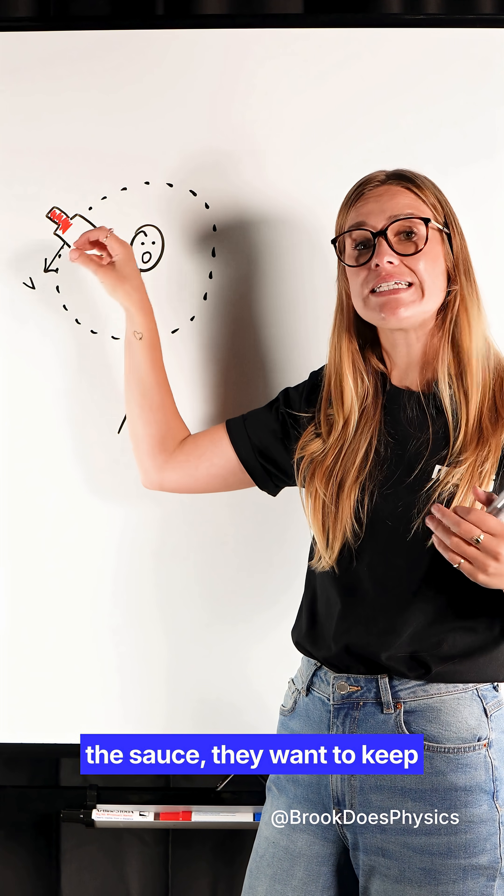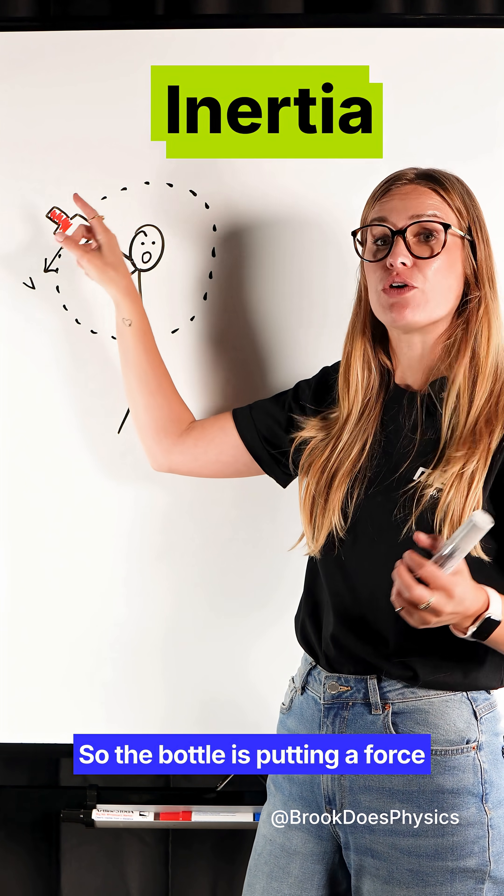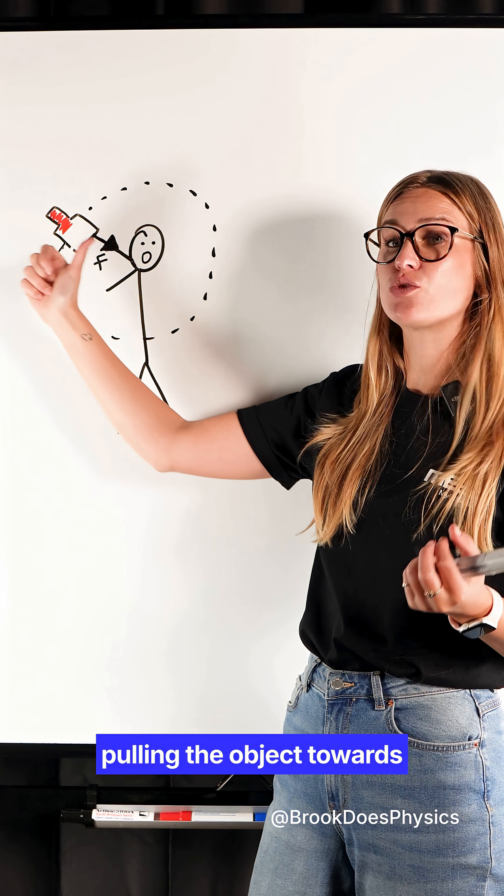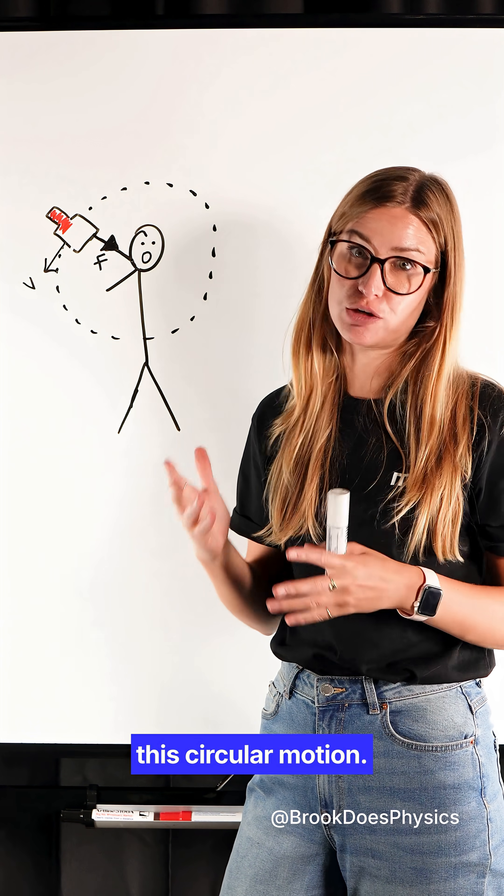However, objects like the sauce want to keep moving in straight lines. That's called inertia. So the bottle is putting a force pulling the object towards the center of the circle, and the sauce wants to resist this circular motion.